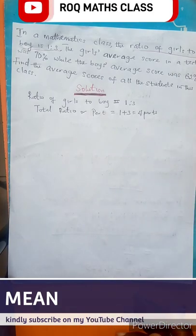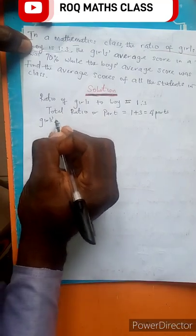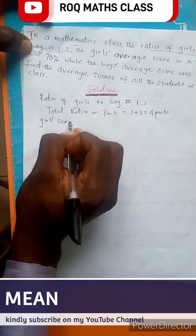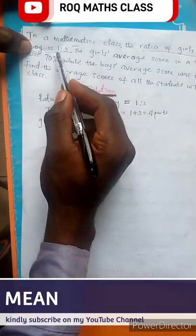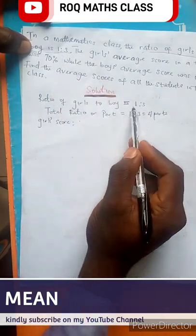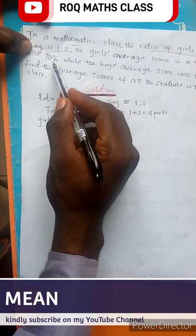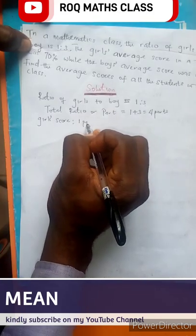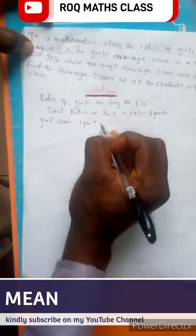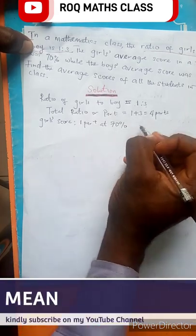Now the second one is the girls' score. This is the same thing as how many girls do we have? We have 1 part of the girls. We have 3 parts for the boys. But the average score is 70%, which is 1 part at 70%. That is 1 times 70%, which equals 70%.